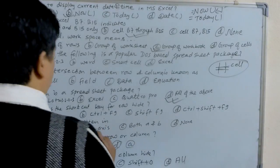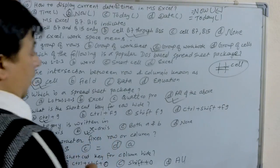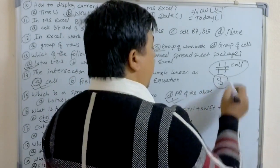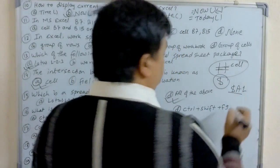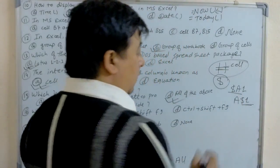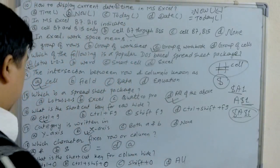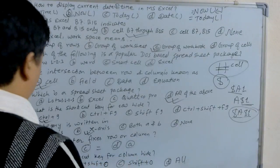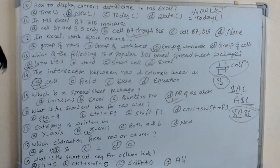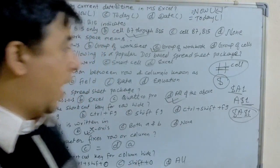Category is always written on the x-axis. Which character fixes a row or column? The dollar sign ($) is used to fix a row or column. $A1 fixes the column, A$1 fixes the row, and $A$1 is known as an absolute cell reference, which fixes both row and column. The shortcut key for column width is Ctrl+0.